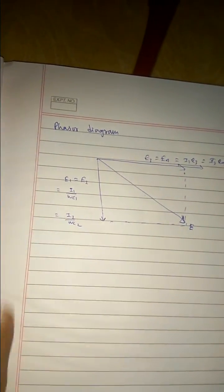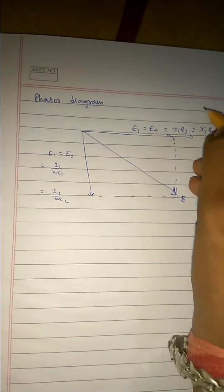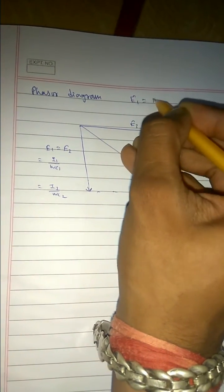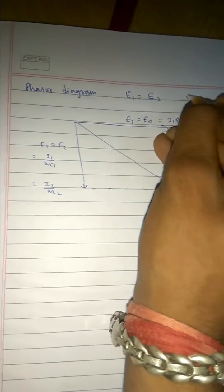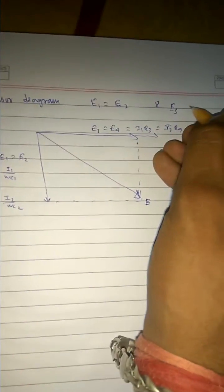The phasor diagram for this is also very easy. At the balanced condition what we found is E1 is equals to E2 and E3 is equals to E4.